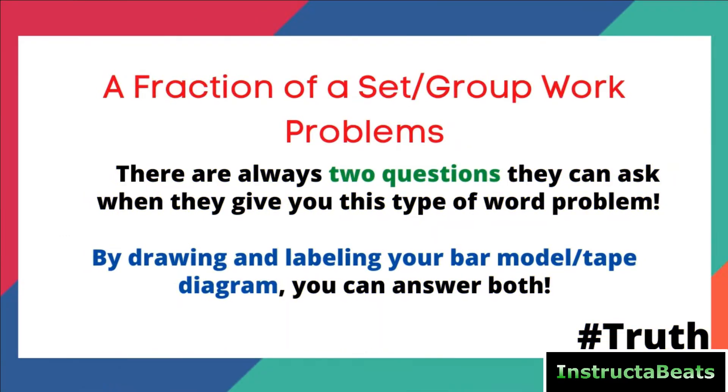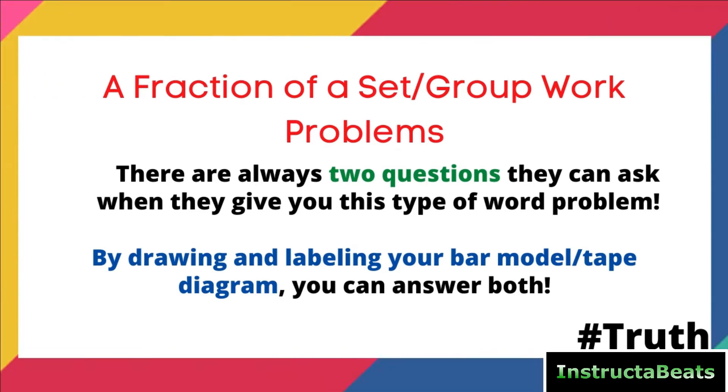Here is your key thought. For these fractions of a group or set problems, there is always two questions that they can ask you when they give you this type of word problem. By drawing and labeling your tape diagram, or some people call it bar models, you can answer both of them. So just by showing this work, you'll be able to answer all of the questions they might try to ask you. And that is hashtag truth.